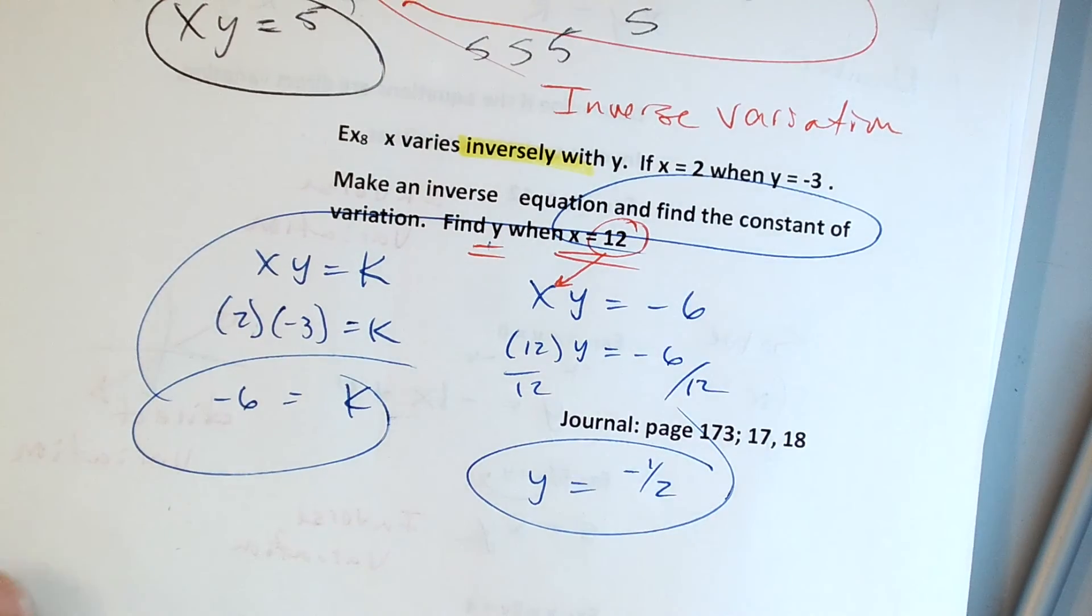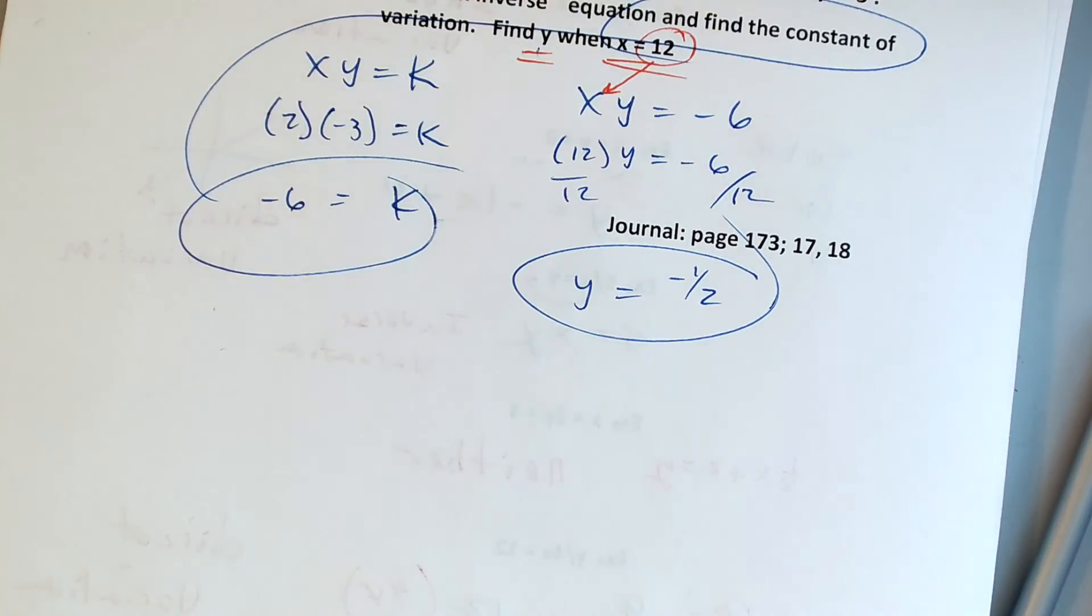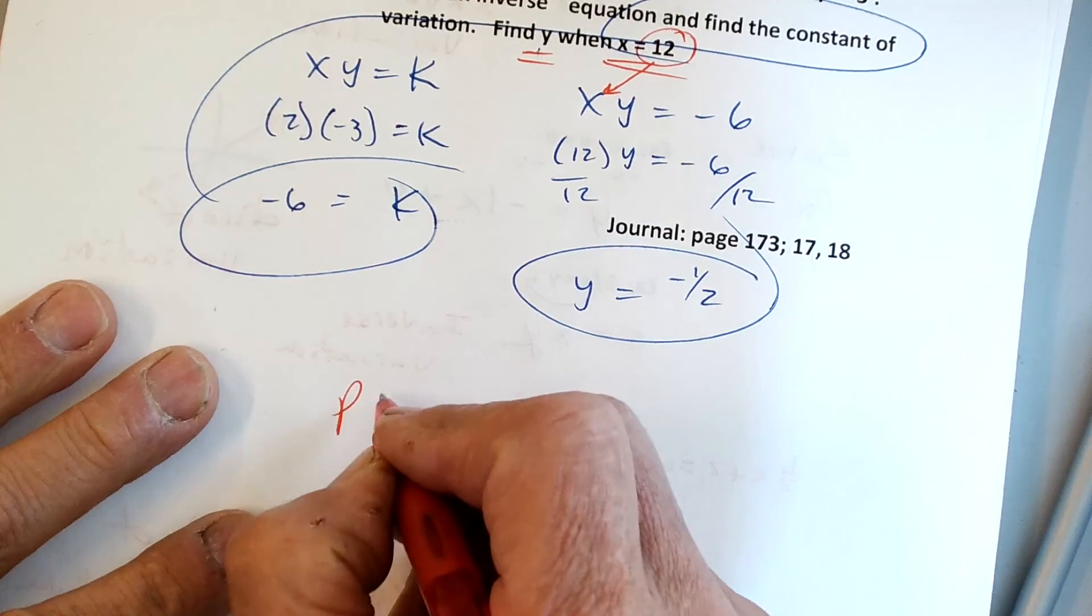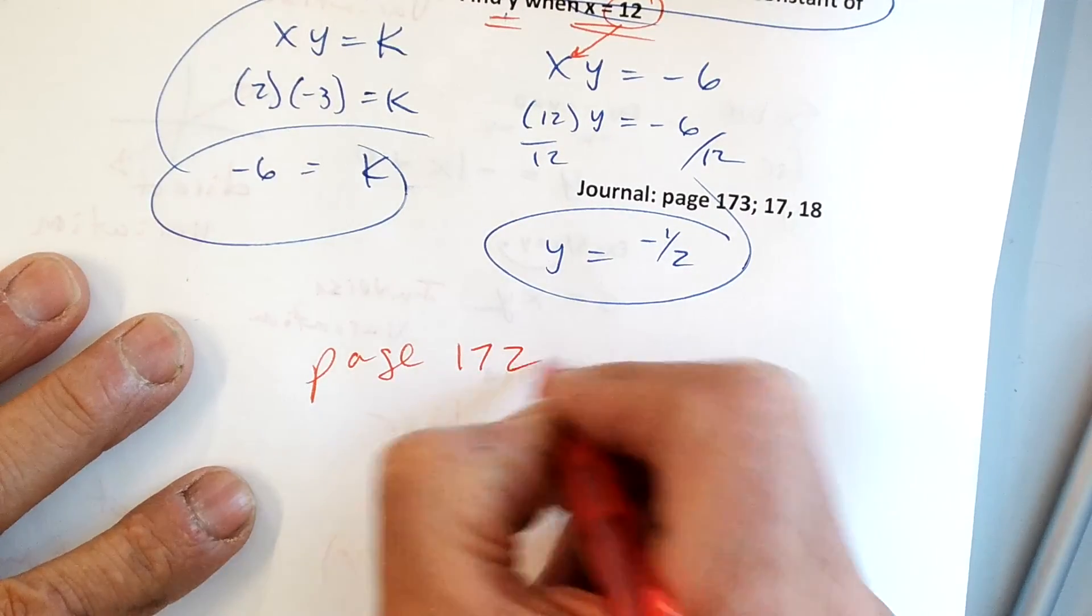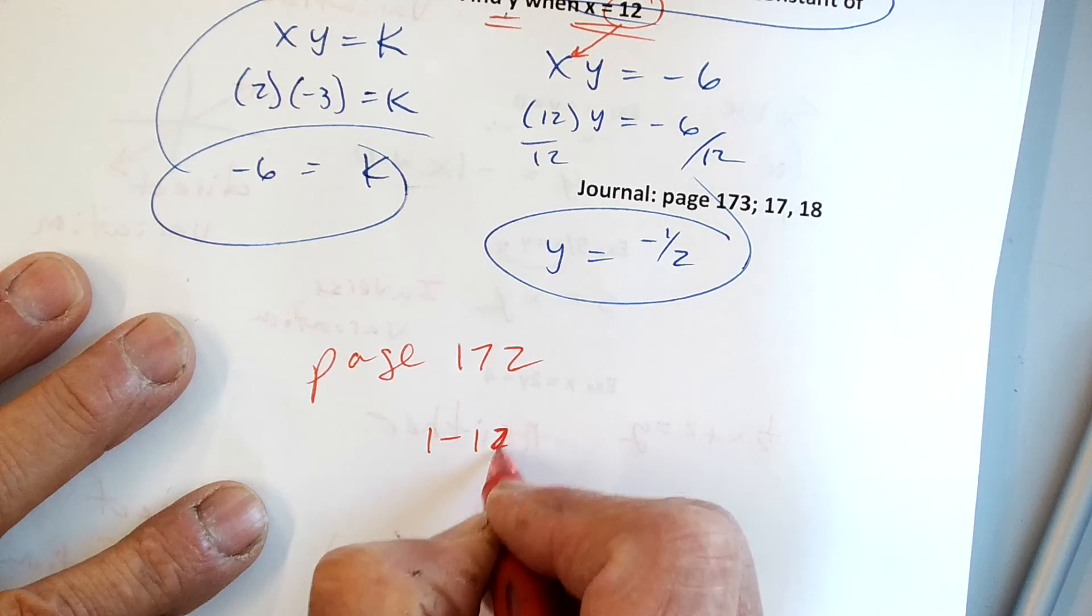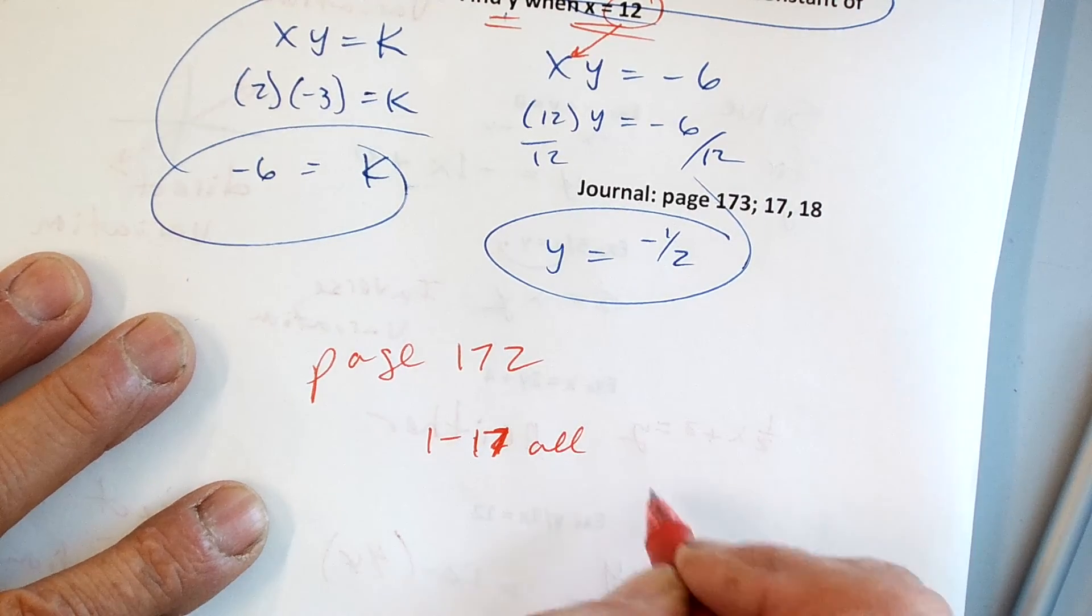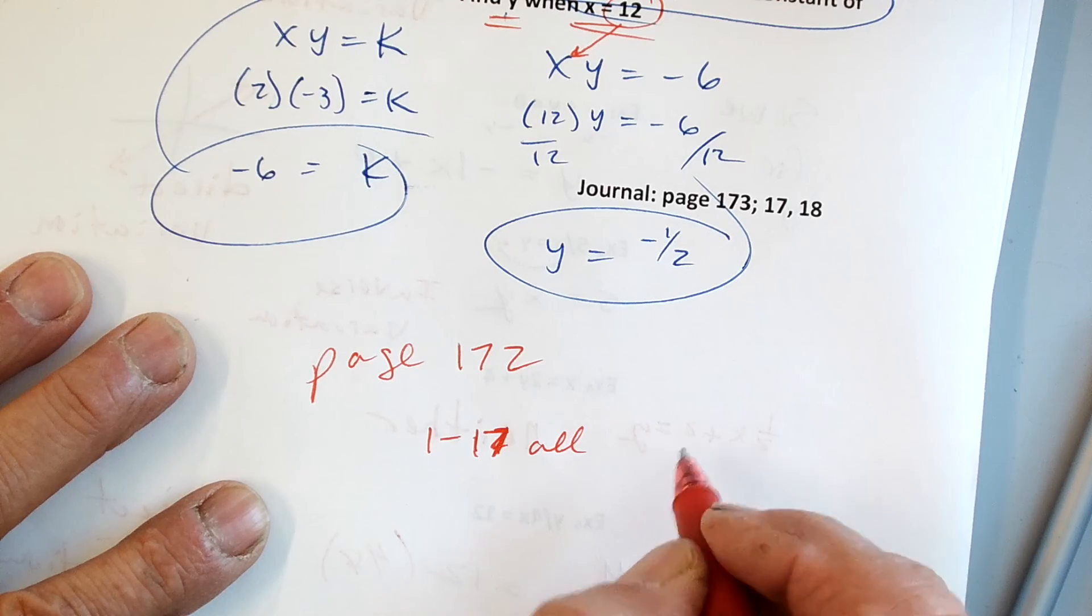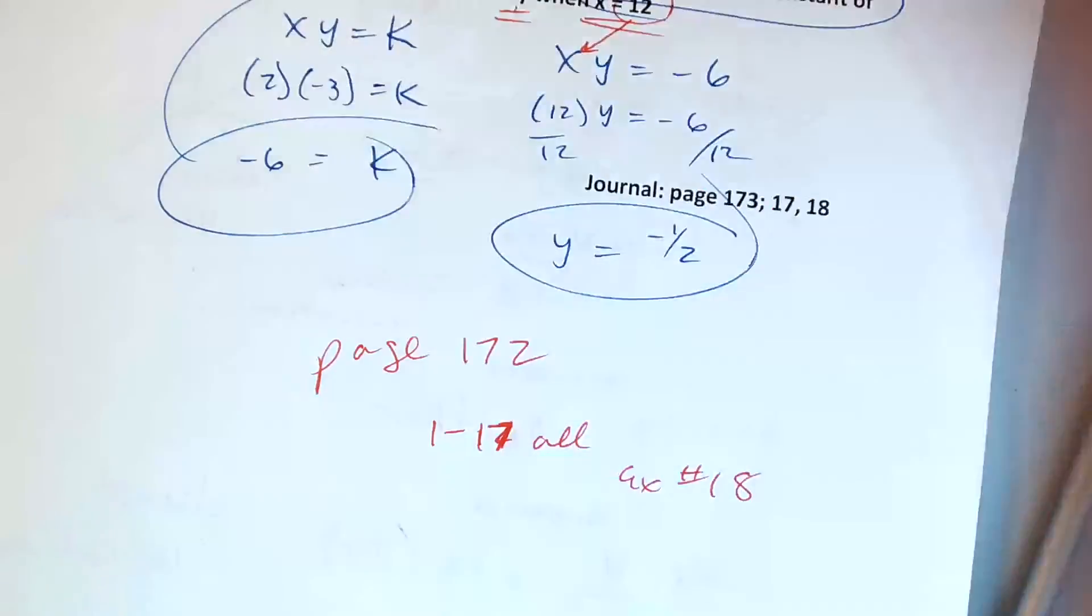That's all I have for homework. We have time to get a lot of it done, which is nice. Homework today is going to be out of your journal page 172. We're going to do 1 to 17 all. It seems like a lot, but it's not that much. We're going to do 1 to 17 all, and our extra is number 18. Not that bad.